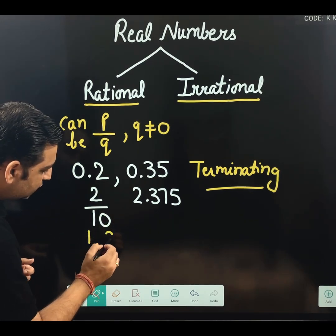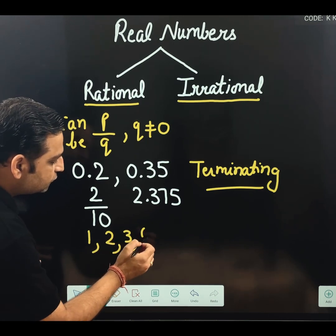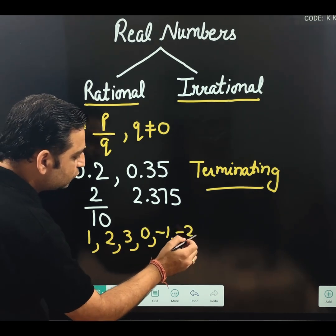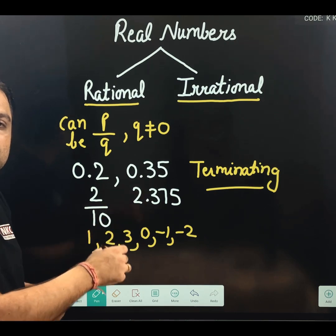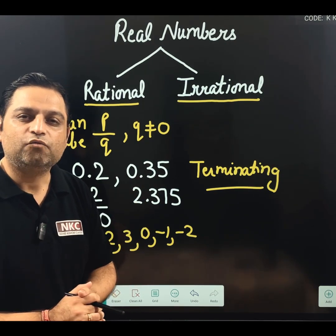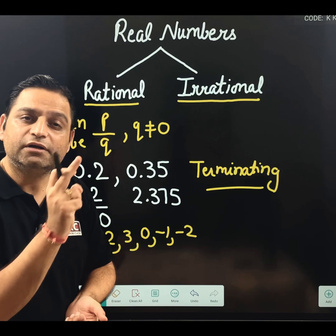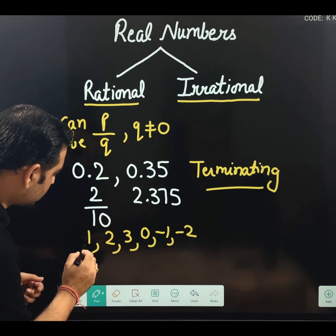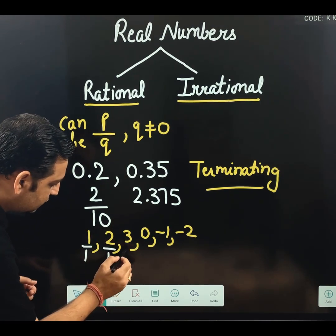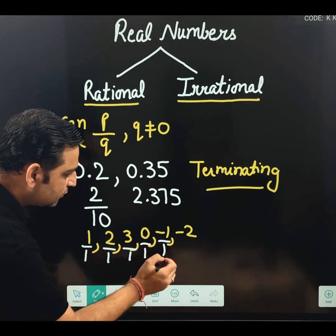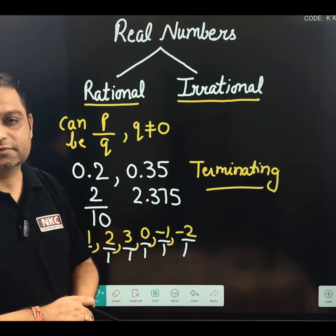Other than that, I am writing few numbers like 1, 2, 3, 0, minus 1, minus 2, whatever. These all are rational numbers. Why rational? Because these can be written as P upon Q form. You can write 1 below them as a denominator everywhere. So, they are also rational numbers.